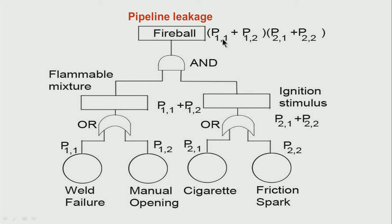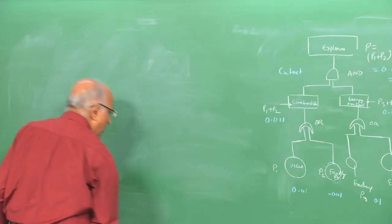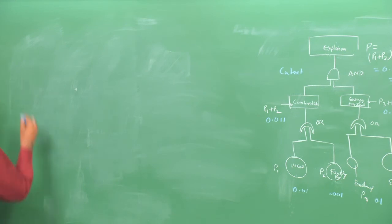In other words, we try to go from top down through deductive logic, come to the basic events, and keep progressing until we arrive at the final explosion. This is what we mean by fault tree analysis — it is very successful and has been applied in space programs to find defects which could lead to loss of mission. Having said that, let us go to the next method: event tree analysis.